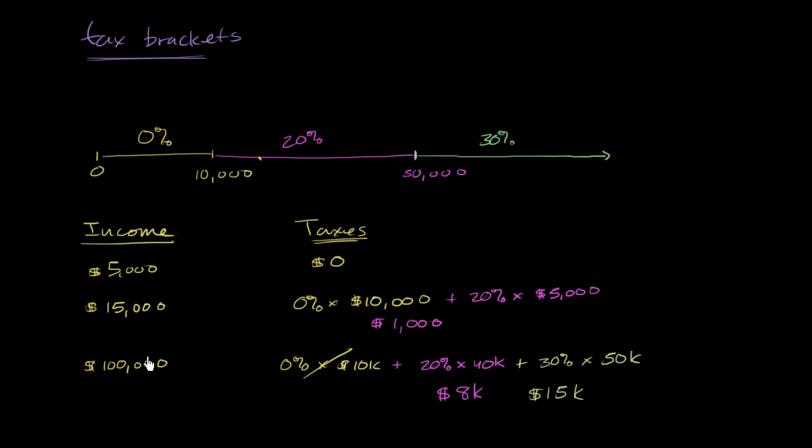So in this situation, the person will not pay 30% on the entire $100,000. They will pay $8,000 plus $15,000, which equals $23,000 in income taxes.